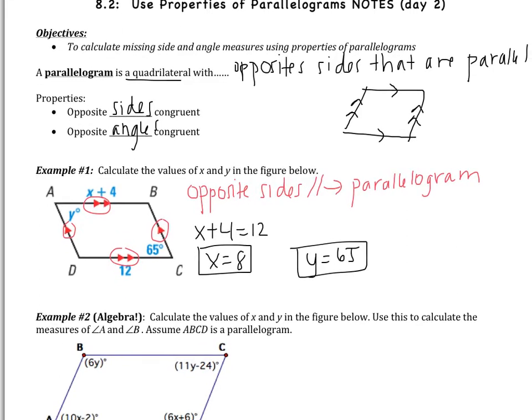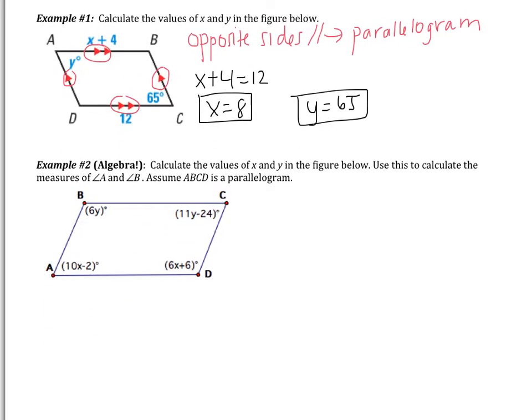The next example is similar but involves more algebra. Calculate the values of x and y in the figure below, then use these to calculate the measures of angles A and B. Assume ABCD is a parallelogram, so opposite sides are parallel. The opposite sides are congruent — not helpful here since no side markings are given. The opposite angles are congruent, so angle B is congruent to angle D, and angle A is congruent to angle C.